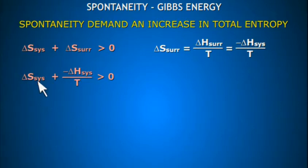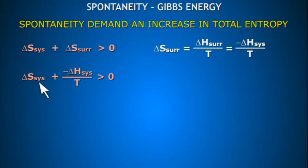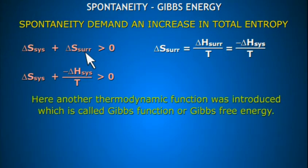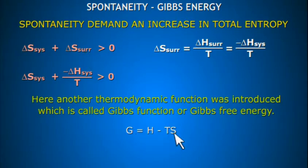In other words, the process may not be spontaneous even if ΔH(system) is negative, because ΔS(system) may be negative as well. Again, ΔS(system) may be positive but ΔH(system) may also be positive, making ΔS(surroundings) more negative. Due to this reason, another thermodynamic function was introduced called Gibbs free energy, designated by G, such that G = H − TS.